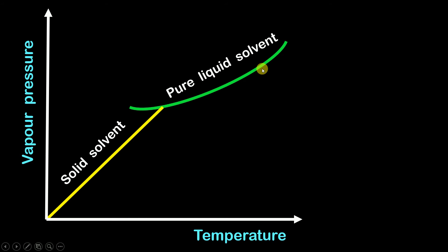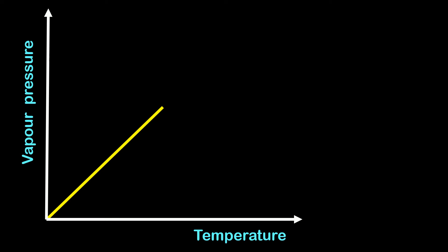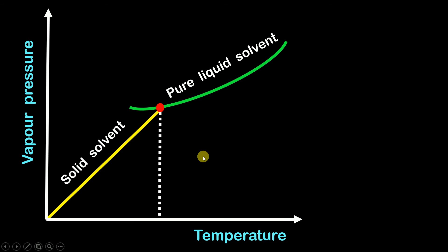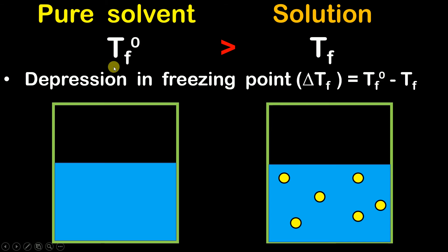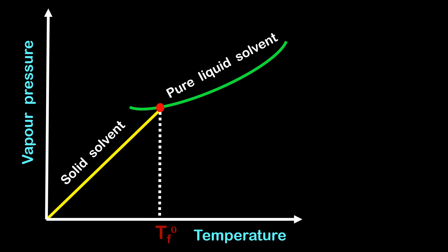Now let us plot another graph for the pure liquid solvent. We observe that both the graphs — for solid solvent and pure liquid solvent — intersect at a point. At this intersection point, the solid solvent is in equilibrium with the pure liquid solvent. The temperature at this point is the freezing point, which we have assumed to be Tf0.